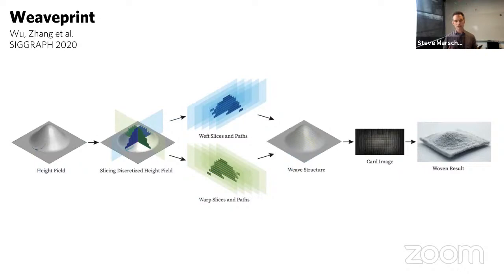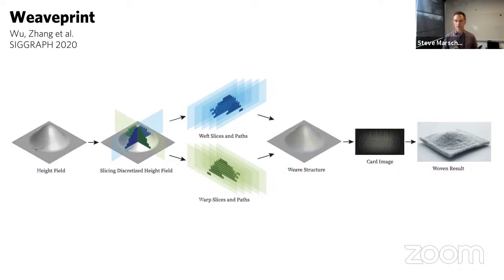The basic idea is that WeavePrint takes the height field and thinks of it in terms of perpendicular sets of slices — slices in the warp direction and slices in the weft direction. Each slice gets a yarn routing designed following construction rules for certain fabric types. Together, these make an interlaced structure that holds together. There are interesting details about what you do at the surface to keep things clean. Ultimately you have a weave pattern — essentially a binary image of when every yarn goes up and down — that you can feed to the manufacturing equipment.